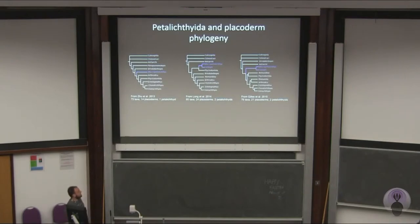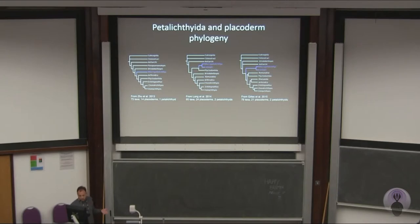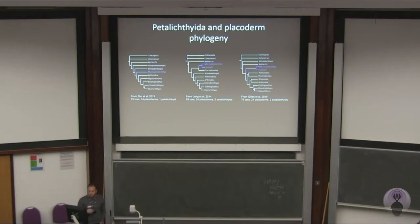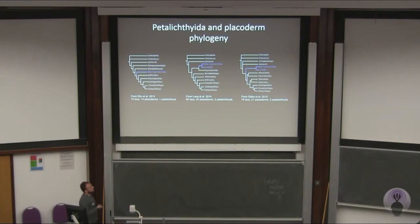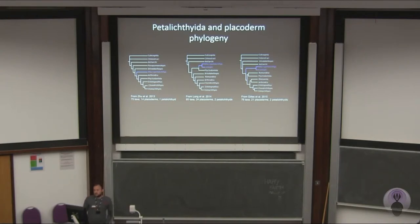Nevertheless, petalictids have been under-sampled in recent phylogenetic analyses. The problem is that we know very few things about petalictids — just one taxon has been studied in detail, macropetalictid, by Stensio almost 100 years ago. The other one is Romundina, which is a complete specimen but we cannot see the internal characters. So even though we know petalictids are a very important group as a morphological intermediate between jawless and jawed fish, we still don't know enough about them.